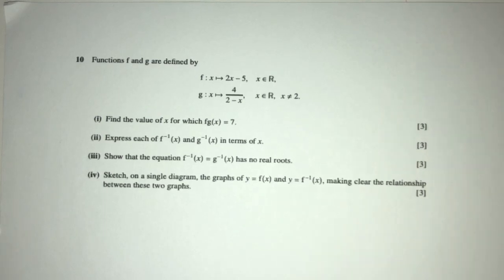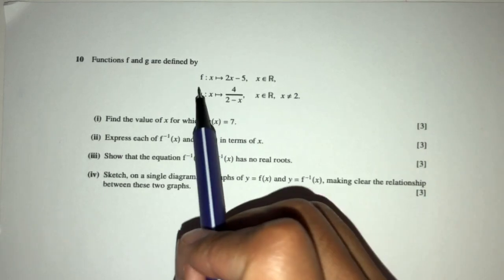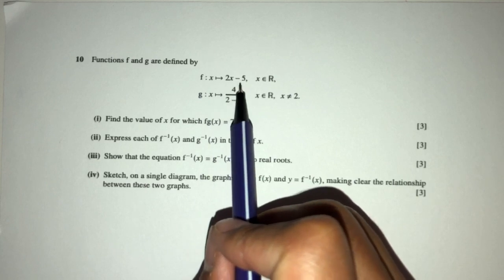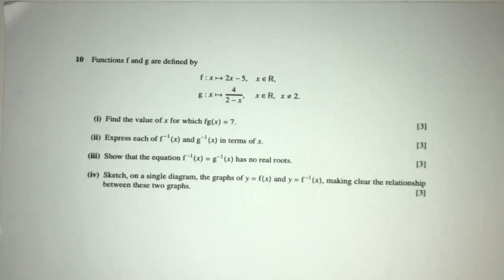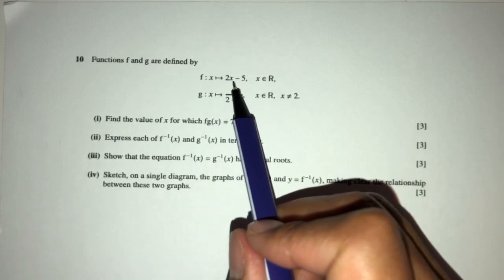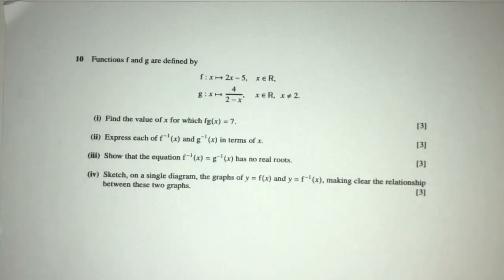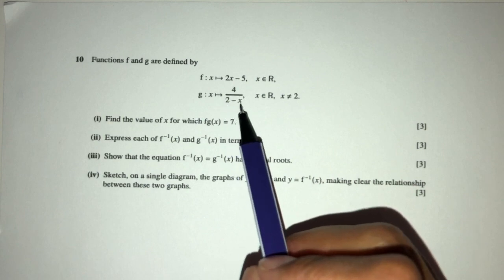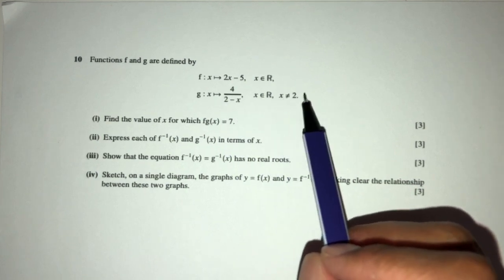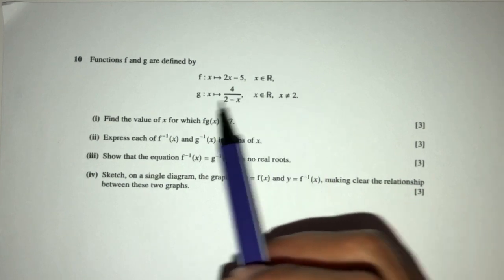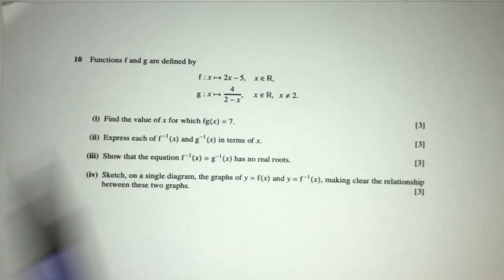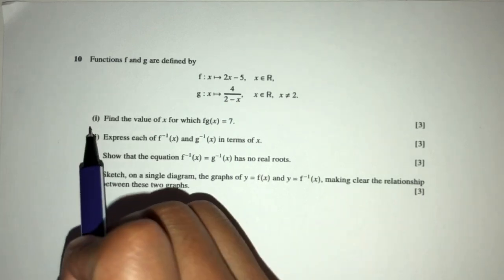Next question: functions f and g are defined by these two equations. First, f(x) = 2x - 5, where x can be any value. You can see 2x - 5 is a straight line. Now g(x) = 4/(2-x), where x cannot be 2. Obviously if x is 2, you have 2 - 2 = 0, and we cannot divide by 0. Let's move on to question part 1.